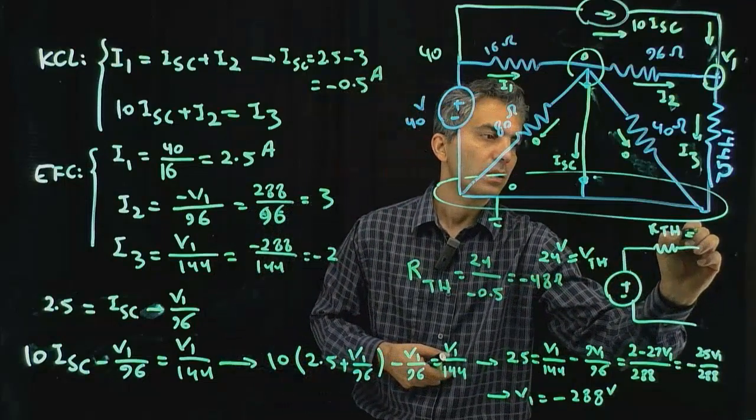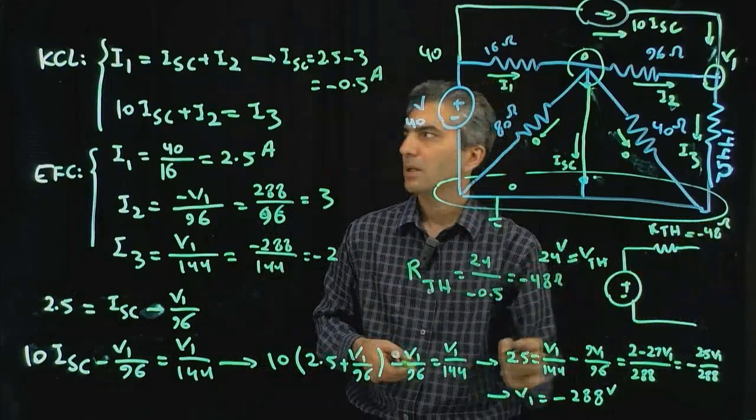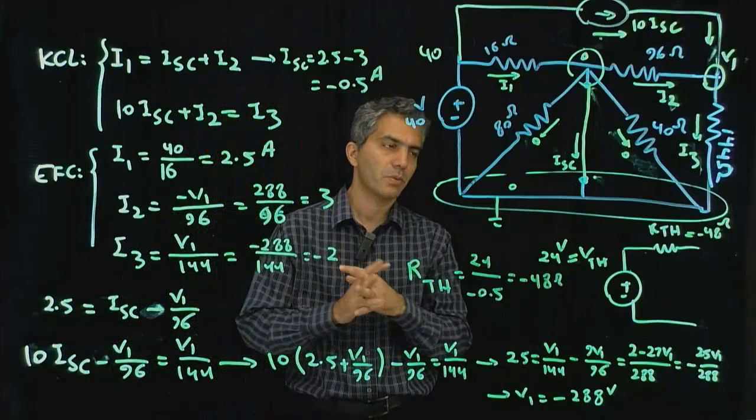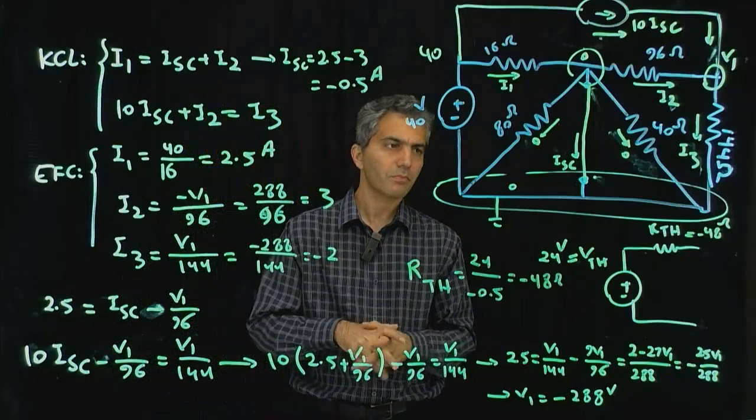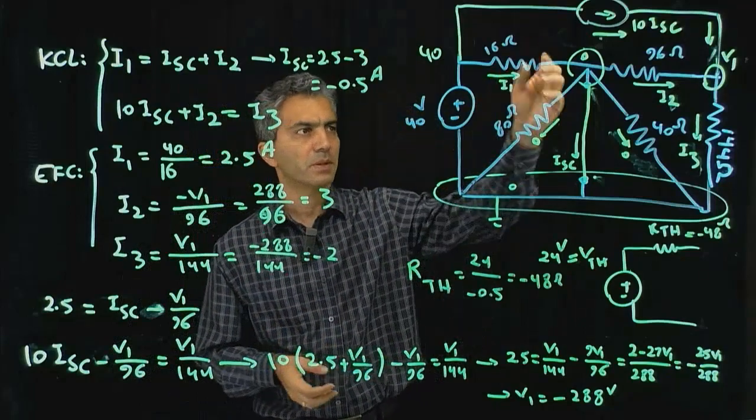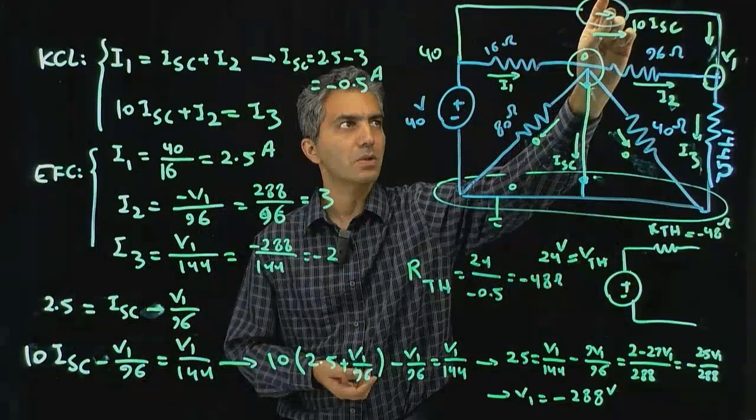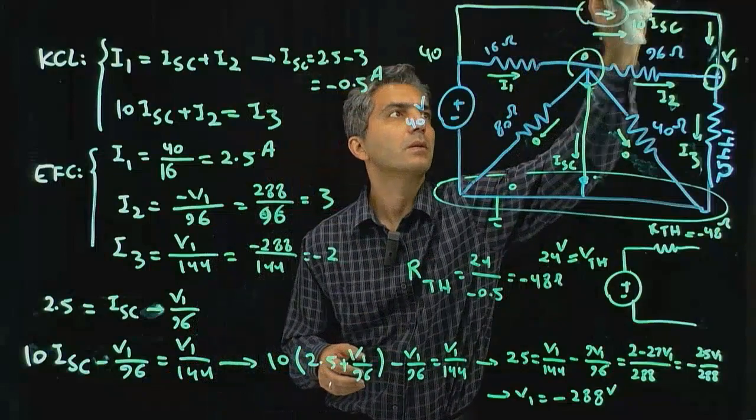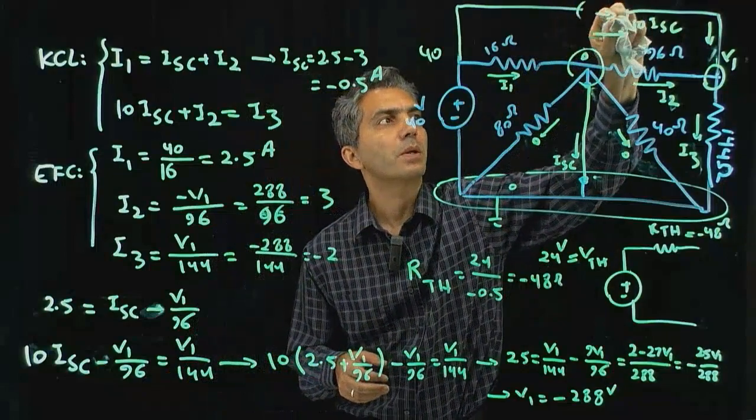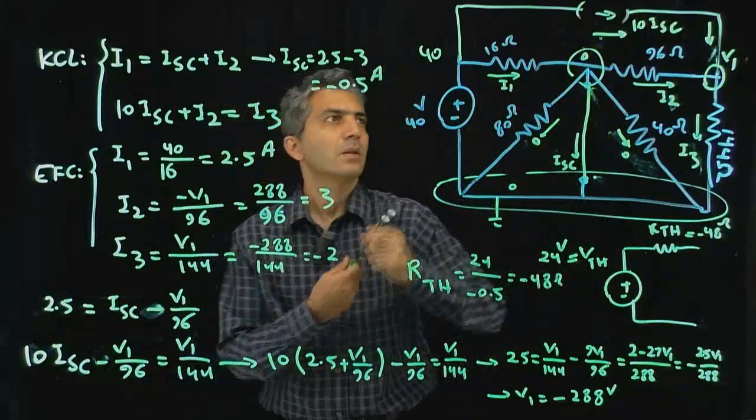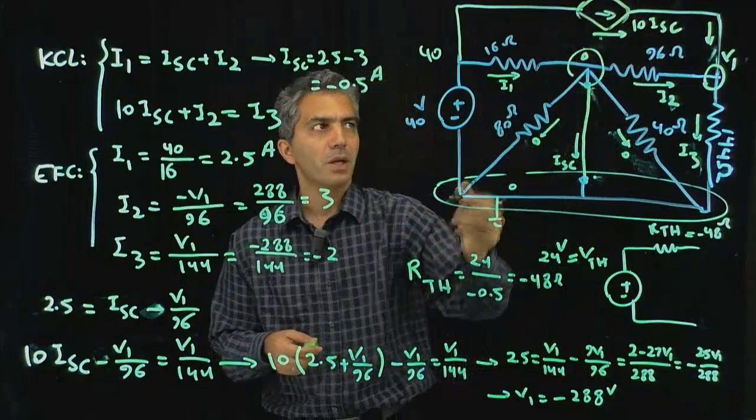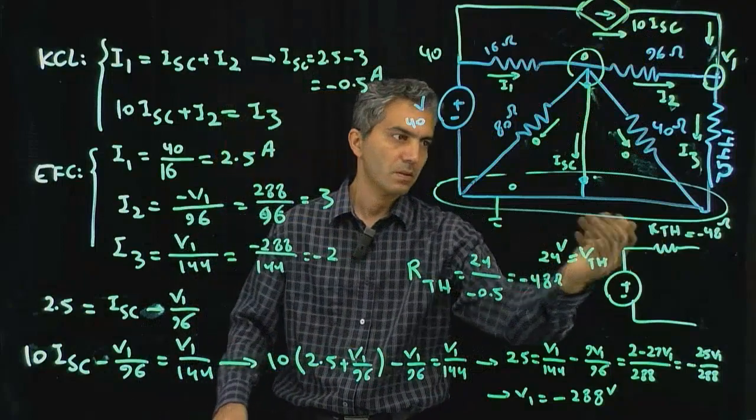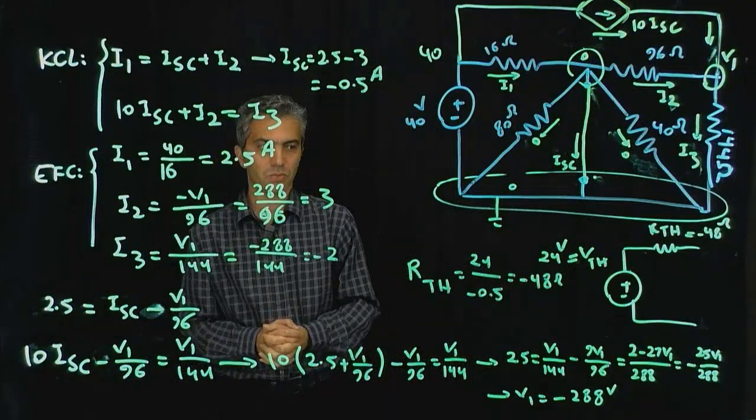It may sound strange that the Thevenin equivalent of this circuit turned out to be a negative number. That's fine in this specific situation as a result of this dependent source being defined the way it is defined. That causes the Thevenin resistance to be a negative number.